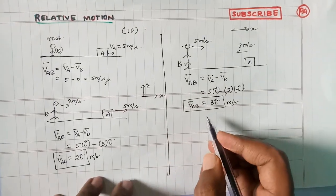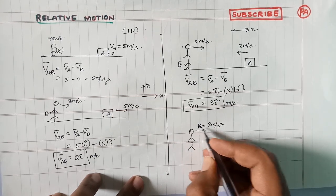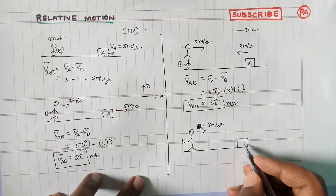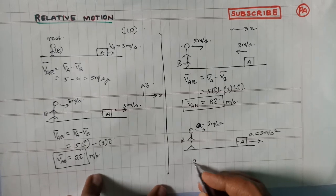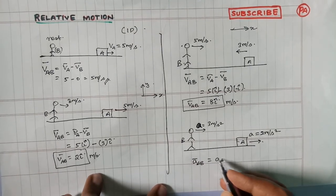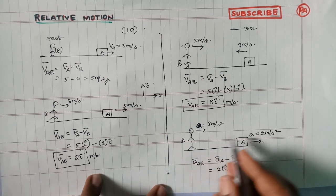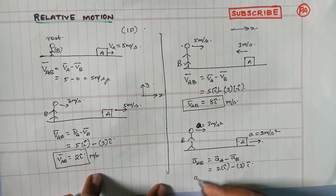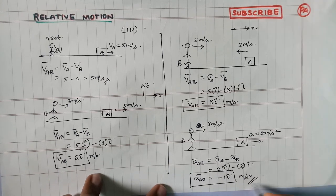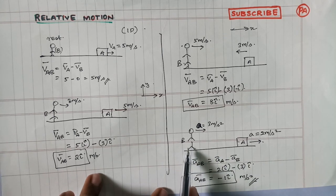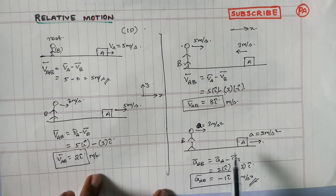What is the acceleration of A? You can do it with acceleration similarly. Observer B has an acceleration, and object A has an acceleration of 2 meters per second squared. The acceleration of A with respect to B equals aA minus aB, that is 2 i-cap minus 3 i-cap, which gives a negative result. That is the meaning of relative acceleration.